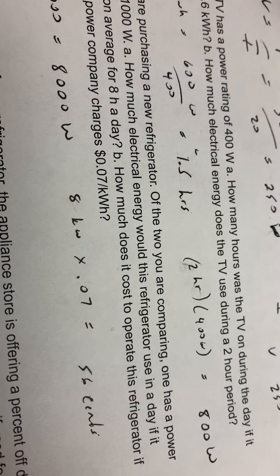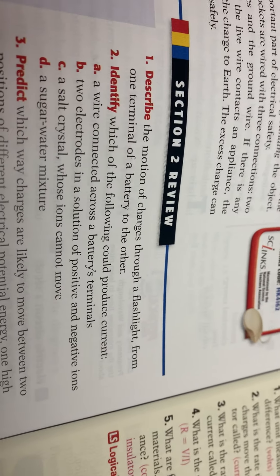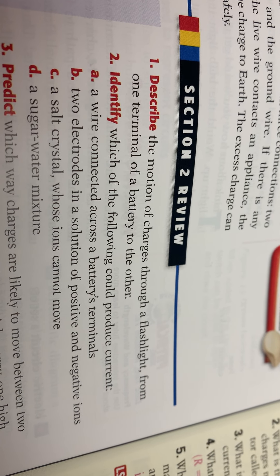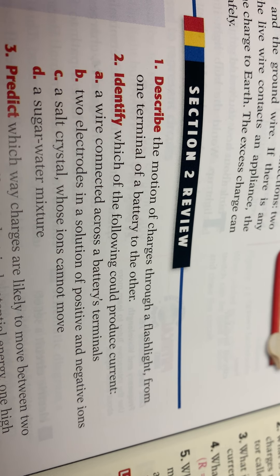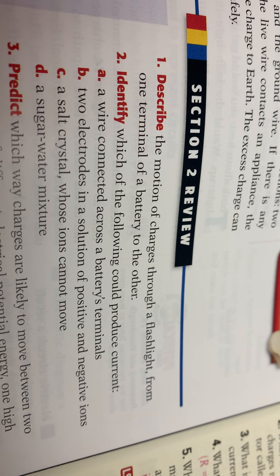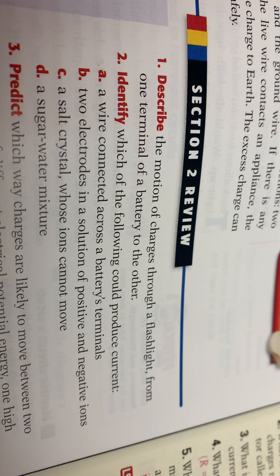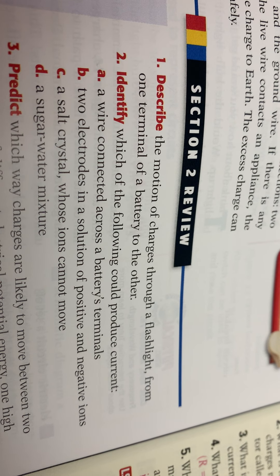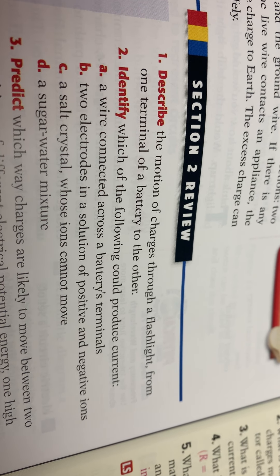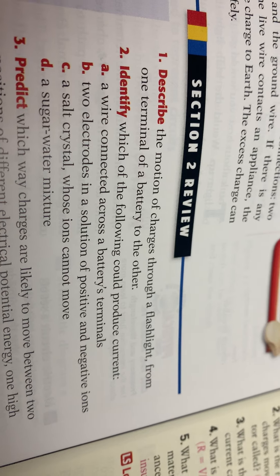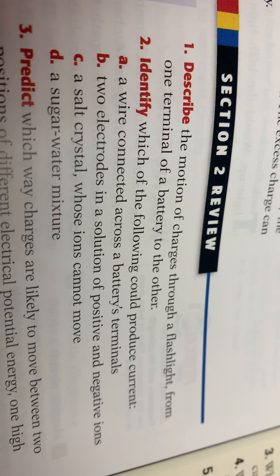All right, the first section review is on page 545, we had to do sections one through five. Number one, motion of a flashlight from one terminal to another terminal: electrons go from negative to positive, or electrons from the negative terminal through the filament in a light bulb and they give off light, and then they travel towards the positive end of the terminal. So electrons start at negative, go through the filament in the light bulb, heat the filament causing light, and electrons now go to the positive end of the terminal.